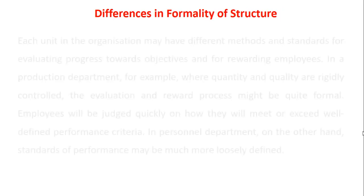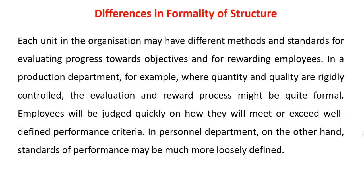The differences in formality of structure: each unit in the organization may have different methods and standards for evaluating progress towards objectives and for rewarding employees. In a production department, for example, where quantity and quality are rigidly controlled, the evaluation and reward process might be quite formal — employees will be quickly informed about how well they meet or exceed well-defined performance criteria. In a personnel department, on the other hand, standards of performance may be much more loosely defined.